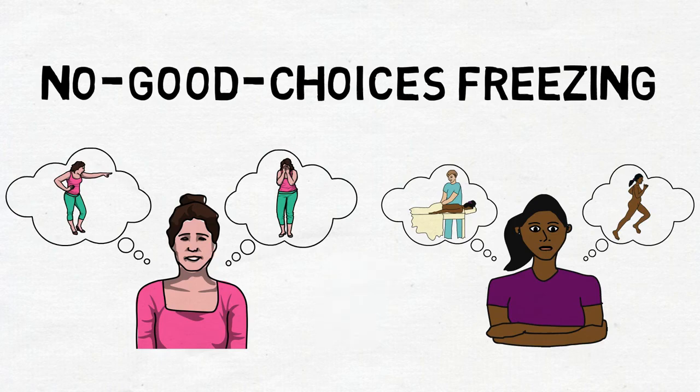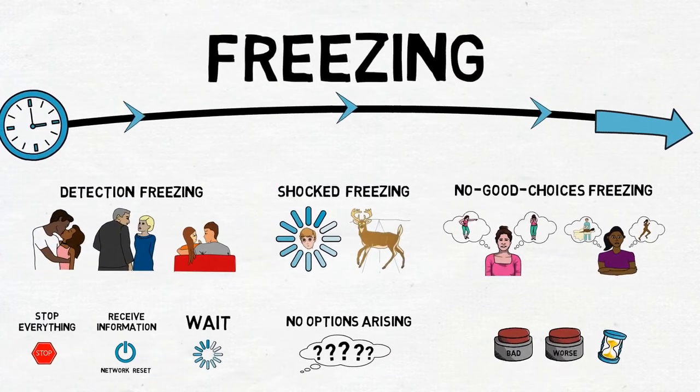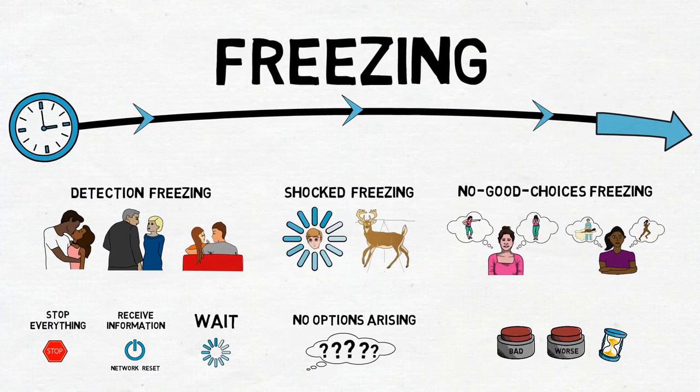We hope it's been helpful to learn about these three different types of freezing. Another video will explain the extreme survival reflexes of tonic immobility and collapsed immobility that tend to happen later in sexual assaults, in which people are not just frozen, but literally paralyzed.